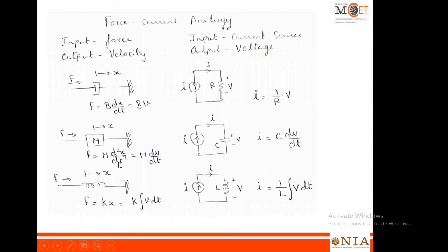For mass in force-current analogy: F = M·(dV/dt), and the current through a capacitor is given by I = C·(dV/dt), where the small-letter V represents voltage — please use a small letter V to differentiate between velocity and voltage. So mass is equivalent to capacitor C. For the spring: I = (1/L)·∫V dt, and equating this to the spring equation, K becomes equivalent to 1/L. In summary: B is equivalent to 1/R, M is equivalent to C, and K is equivalent to 1/L.